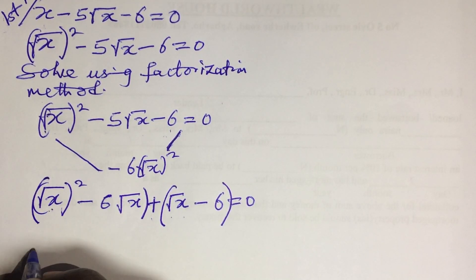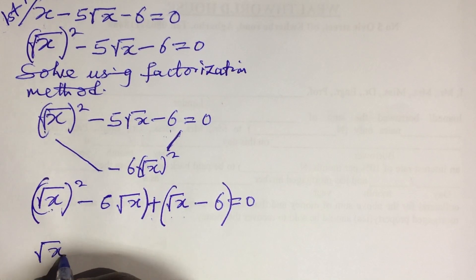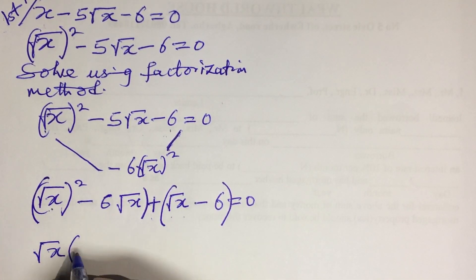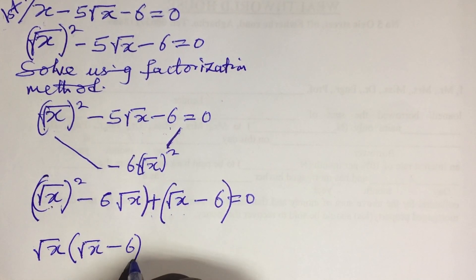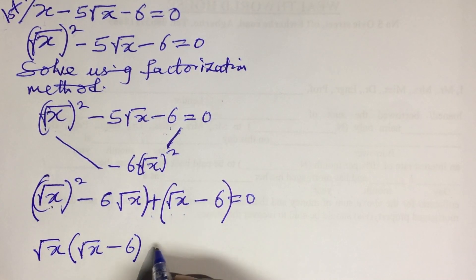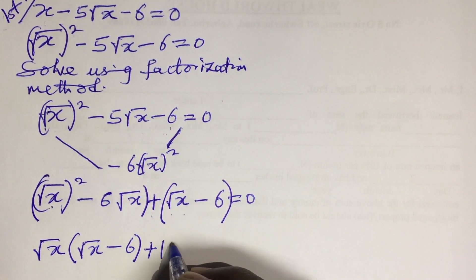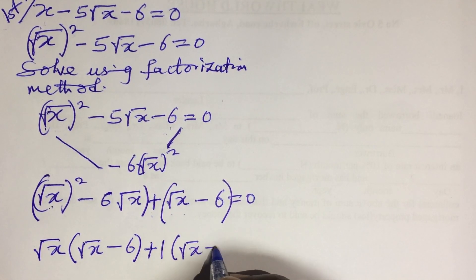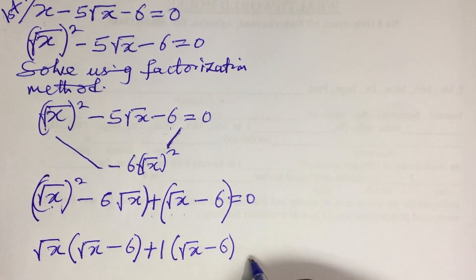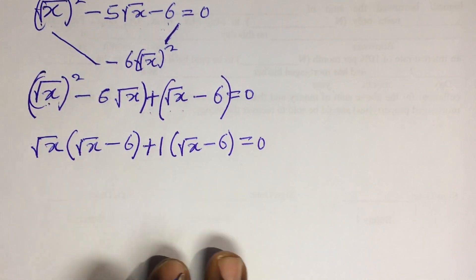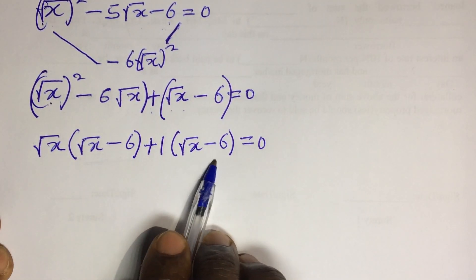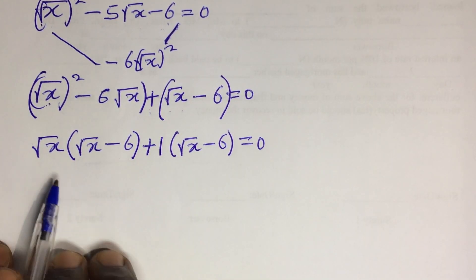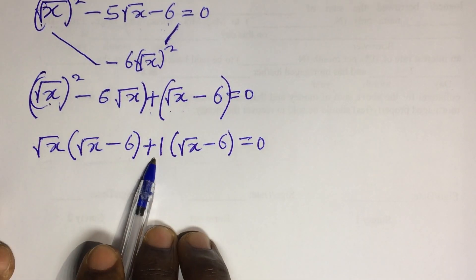We bring out √x from the first two terms, leaving √x(√x minus 6). On the other side, what is common is just 1, so we have plus 1(√x minus 6) equals 0. Looking at both groups, we have the same bracket (√x minus 6) in each.